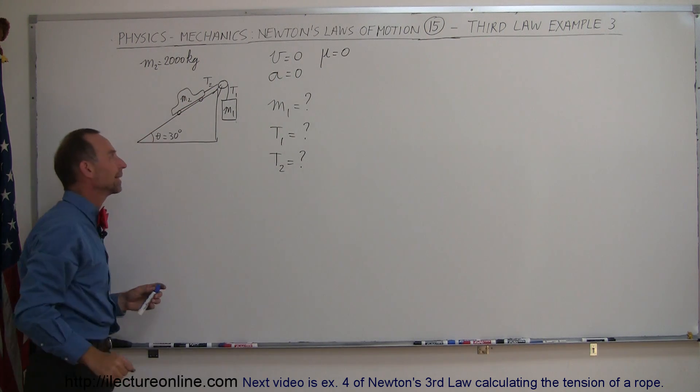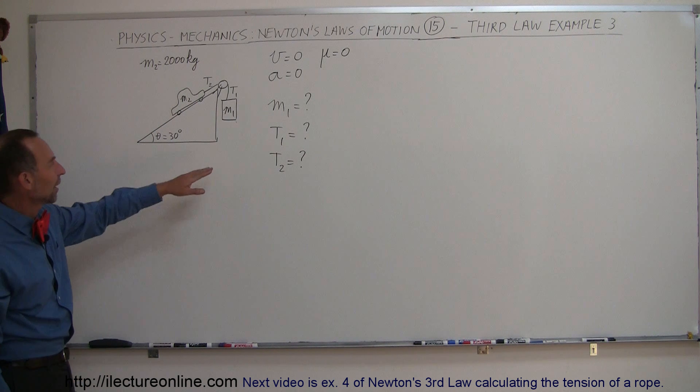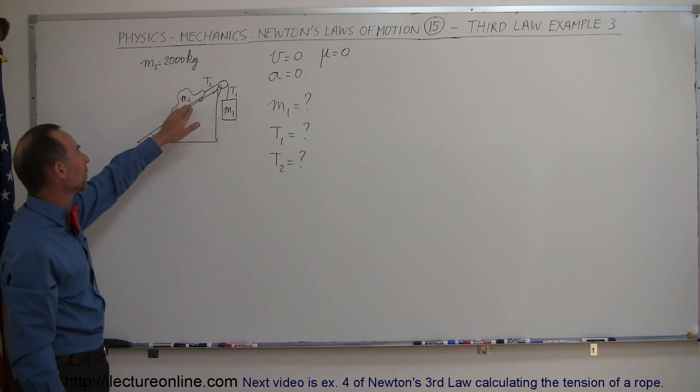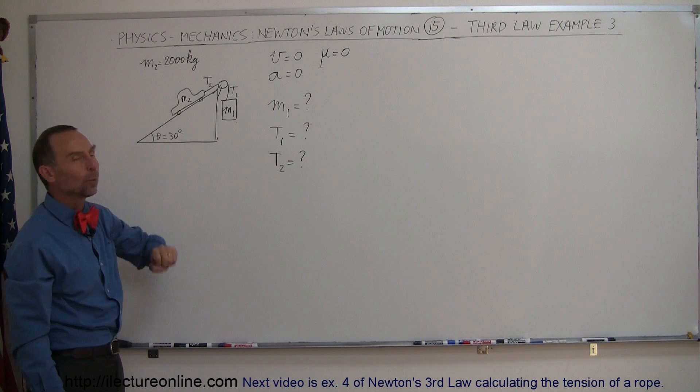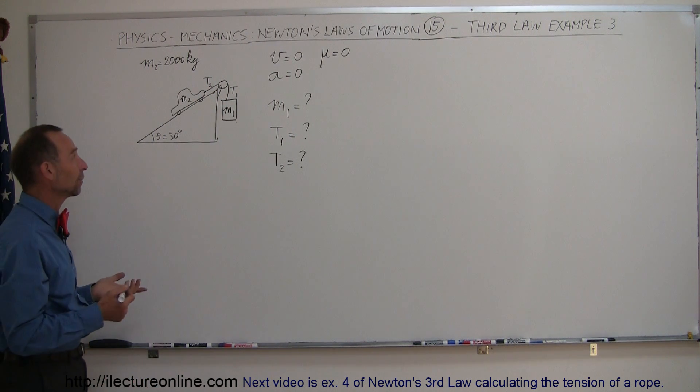There's no friction between the car and the incline, and we're supposed to find out how big is M1 if M2 is equal to 2,000 kilograms. What's the tension over here, and what's the tension over there? So how do we start that?